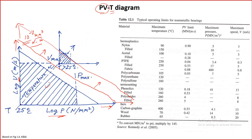We can generate a PV diagram in terms of wear coefficient or in terms of friction, whichever our application demands. As temperature increases, this envelope will go down. At higher temperature we expect the material will not perform as well as at lower temperature. So this envelope goes down as we increase the temperature — there is a temperature effect as well.